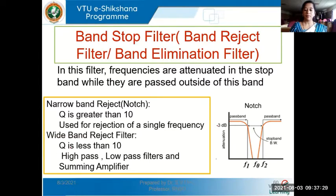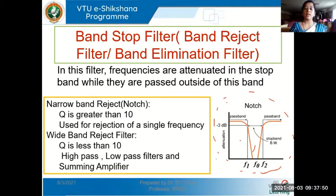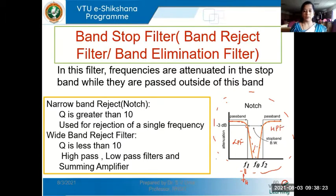As you can see in the frequency response curve shown here, this band reject filter will have two pass bands and one stop band. The bandwidth of that stop band can be determined by the external resistor-capacitor connections in the circuit. The cutoff frequencies F1 and F2 can be determined. F1 corresponds to the cutoff frequency of a low pass filter — the first part of the response is similar to a low pass filter, so I can call it the higher cutoff frequency FH.